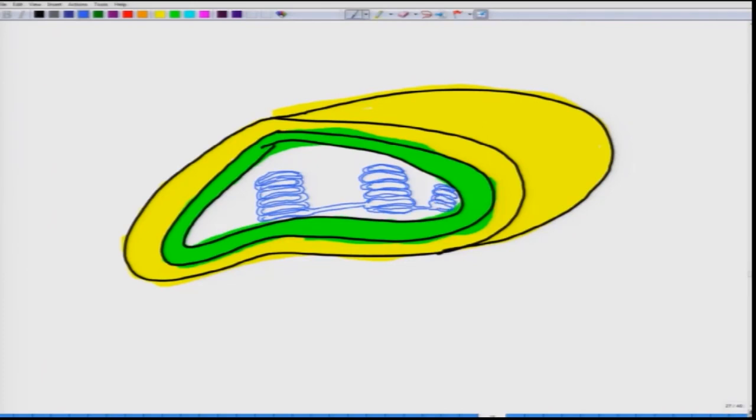Okay. Now, let us put in. So, this is our inner membrane. Then, you have an outer membrane. Further, this part is called the stroma and this whole thing is called the granum.